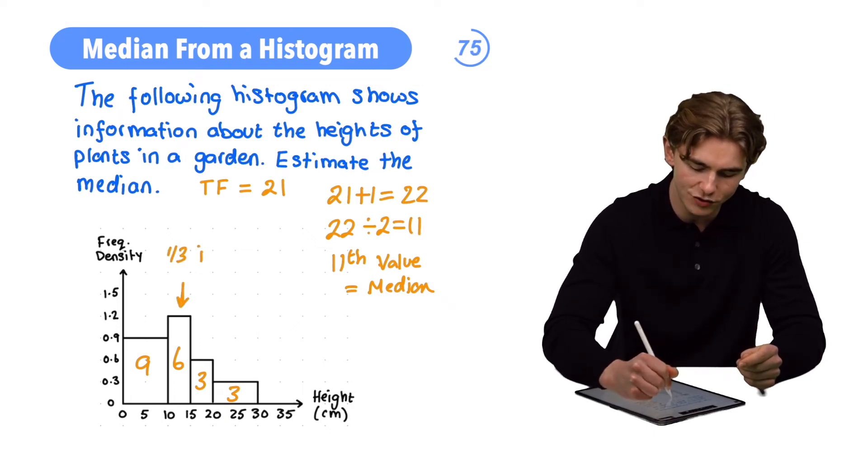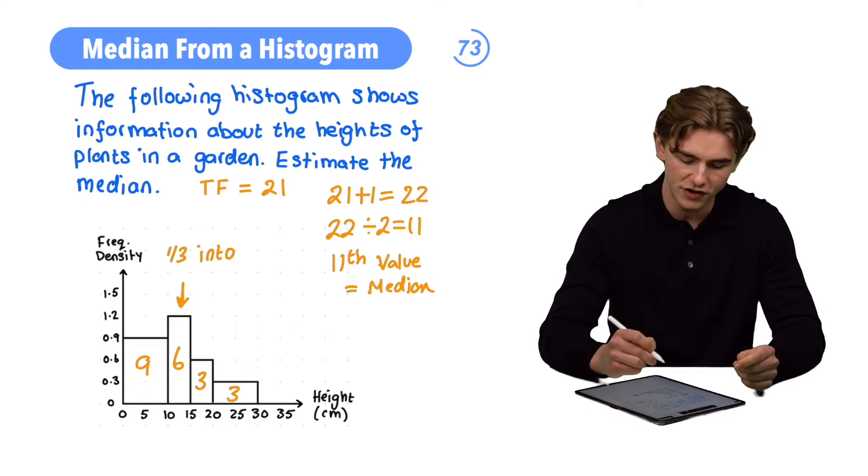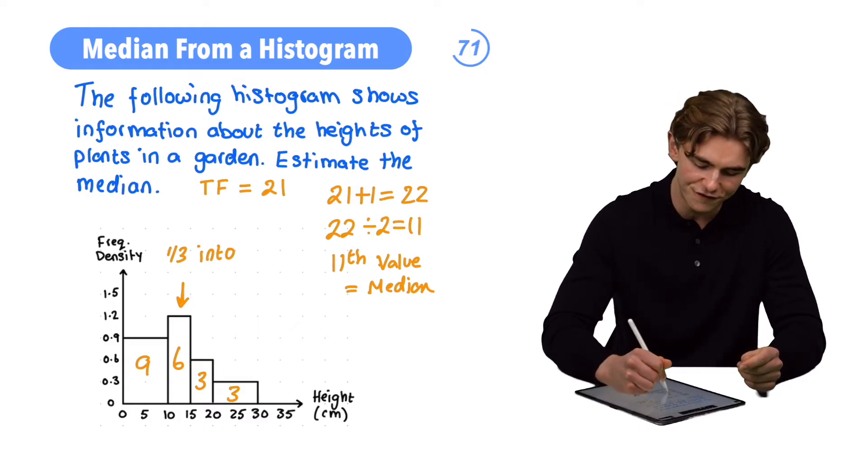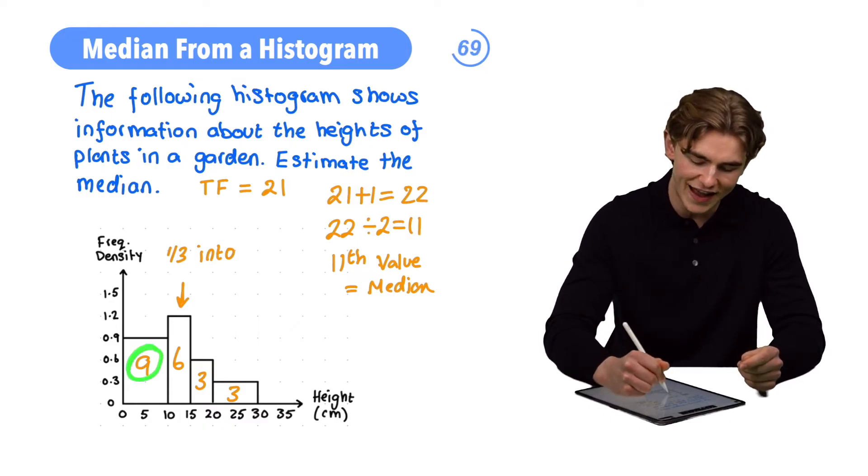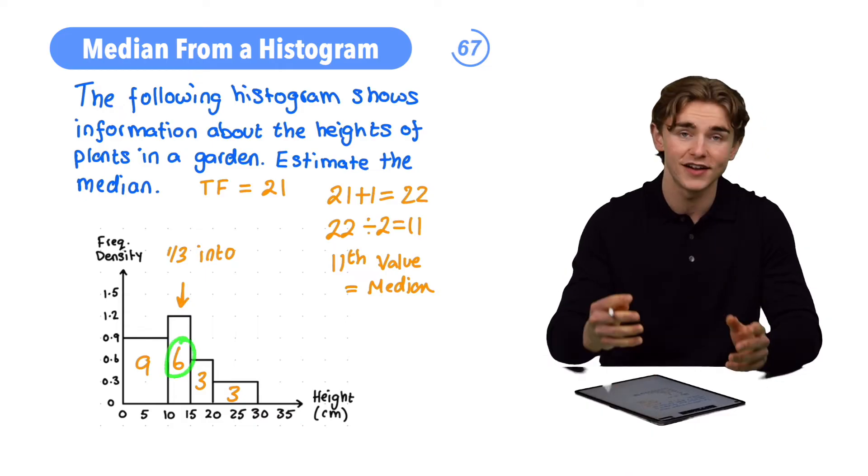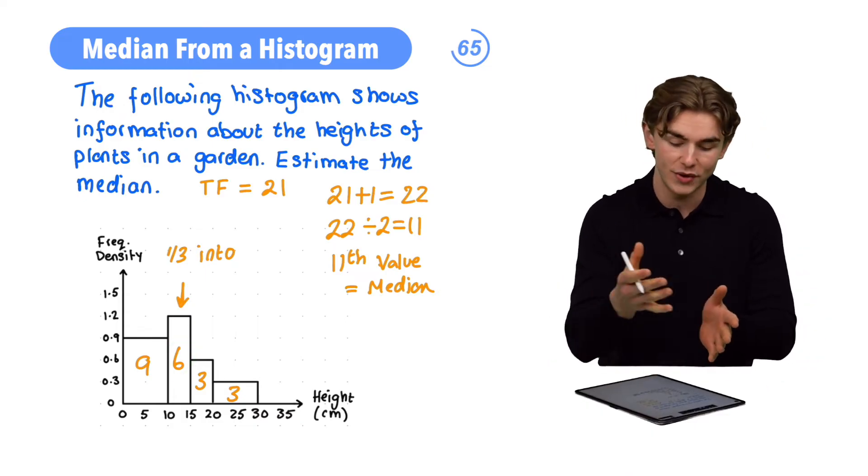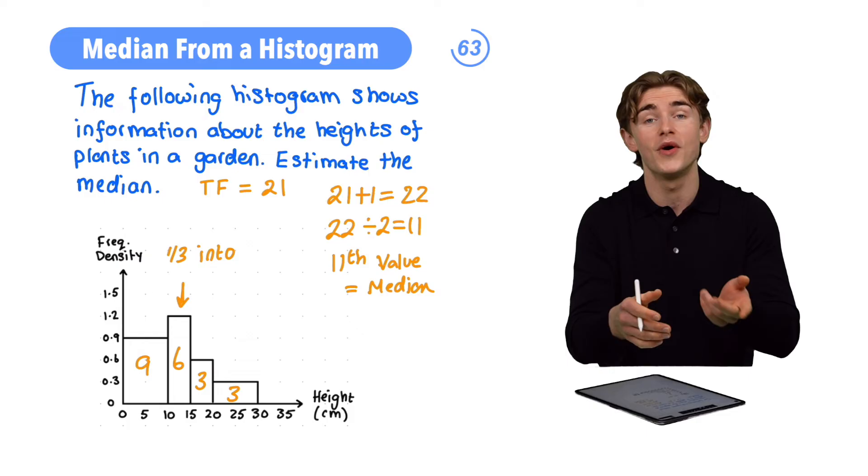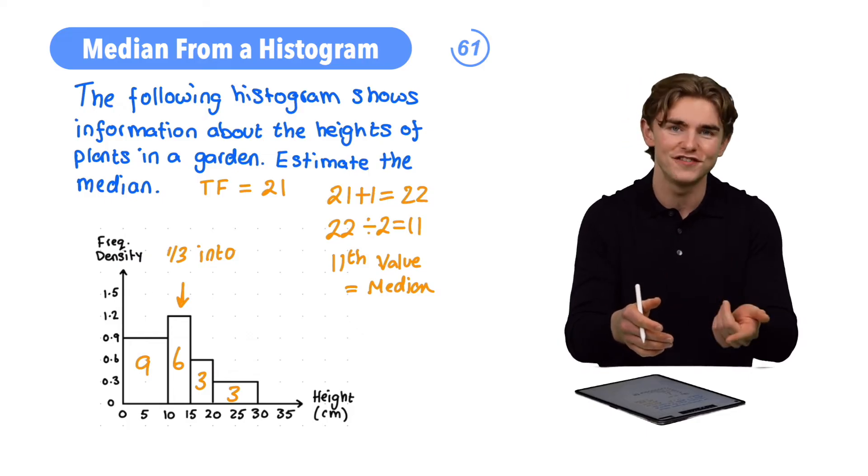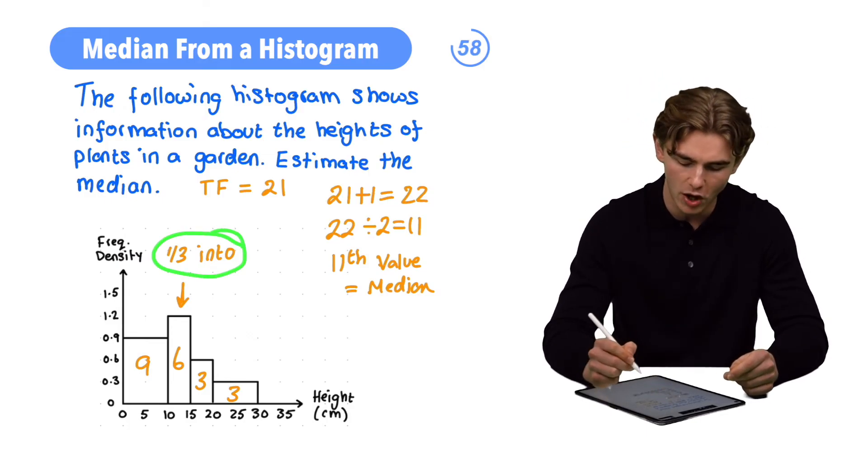We need to go 1/3 into this bar. That's going to take us up to a frequency of 11. Because the first bar represents 9, we're going to need to add 2 out of this 6 to that 9 to get to 11. What is 2 as a fraction of 6? It's 1/3 of 6, so we need to go 1/3 of the way into this bar.